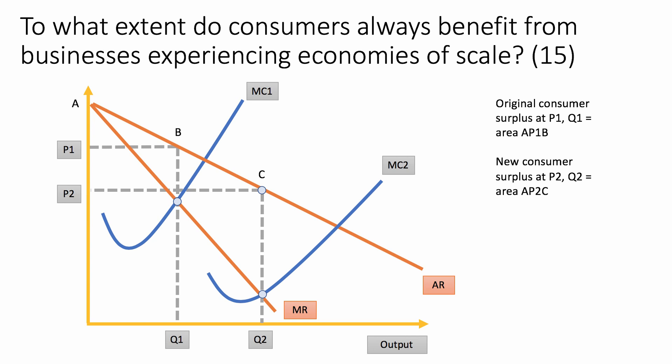As a result, this diagram can show the change in the level of consumer surplus. Originally at output Q1 and price P1, the level of consumer surplus was the area A, P1, B. But with economies of scale, you move to a higher output and price goes down, so the new consumer surplus is a bigger triangle: area A, P2, C. In other words, we're showing here a clear improvement in the level of consumer welfare.